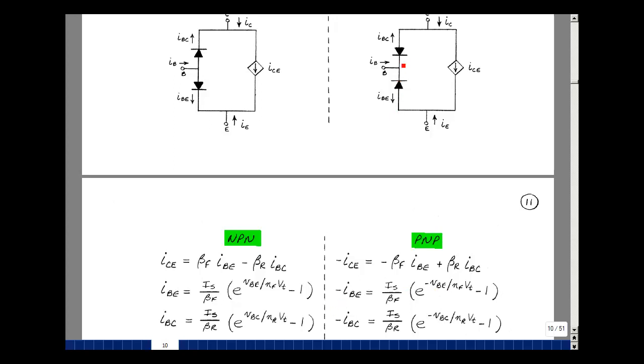Likewise for the base collector, showing the current in this direction, but actually the current would flow in this direction with the Shockley equation, if the voltage across it was from the collector to the base.